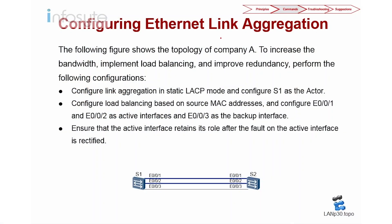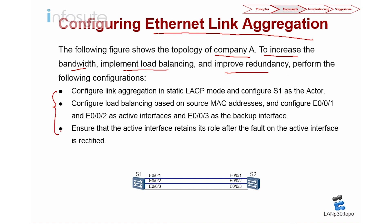So let's look into the second lab here. On the second lab we are going to configure link aggregation. Company A wants to increase the bandwidth, implement load balancing, and improve redundancy. We have three requirements.